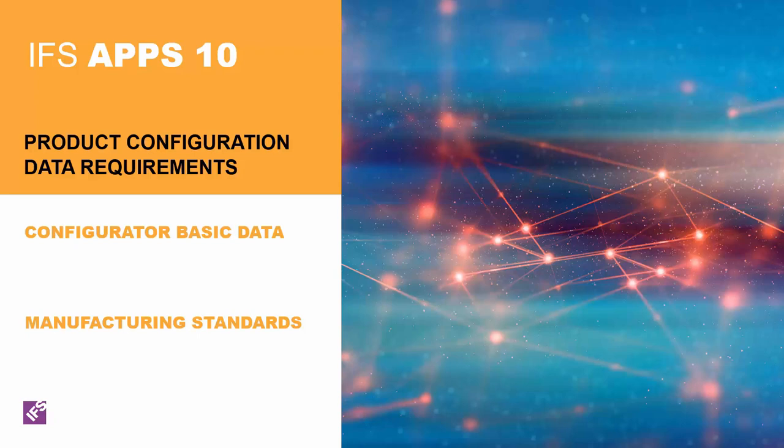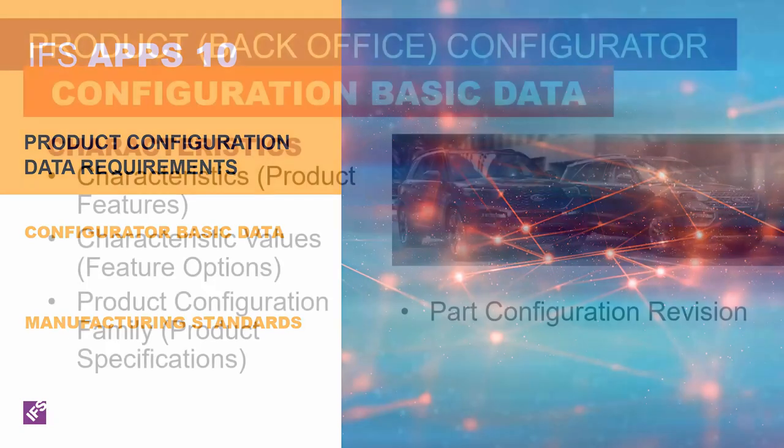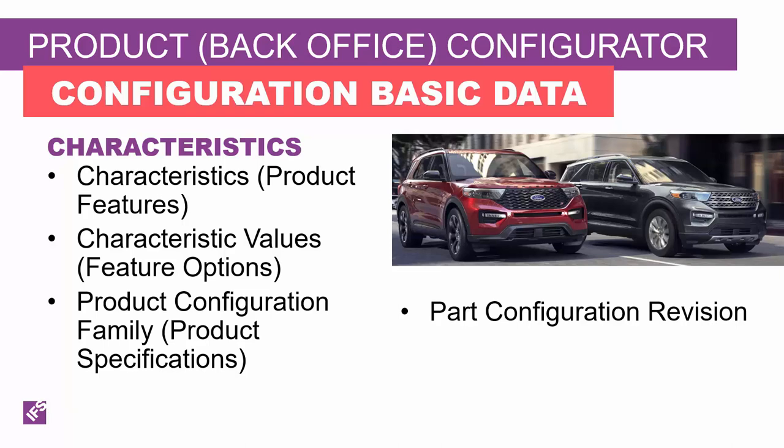Let's take a tour of what's necessary for the IFS configurators to work. For configured products, you will need to identify their attributes by defining characteristics (the features of the product), the characteristic values (suitable option choices for those features), and the product configuration family. Features and options can be used by more than one product family — think exterior colors for trucks and cars. Many products may change their offering of features and options over time; to do this in IFS, you define part configuration revisions.